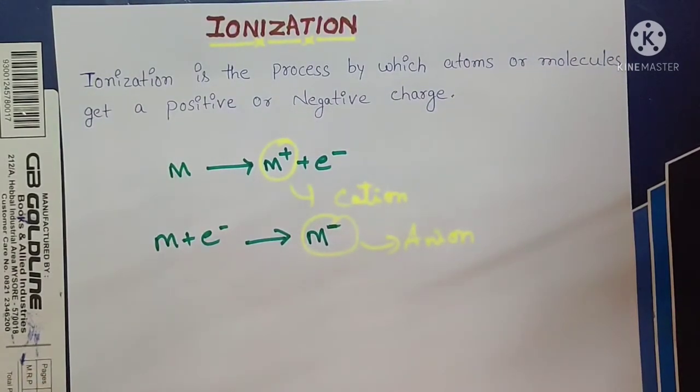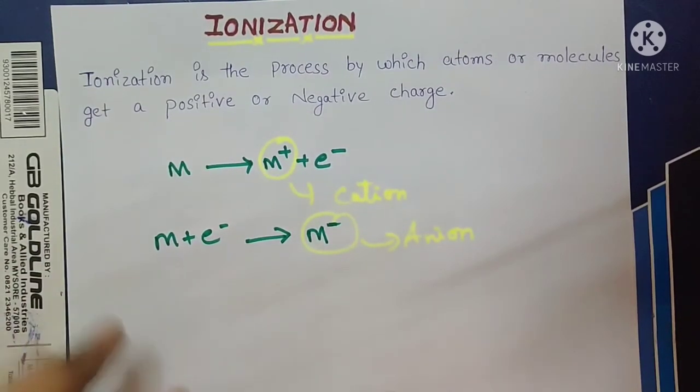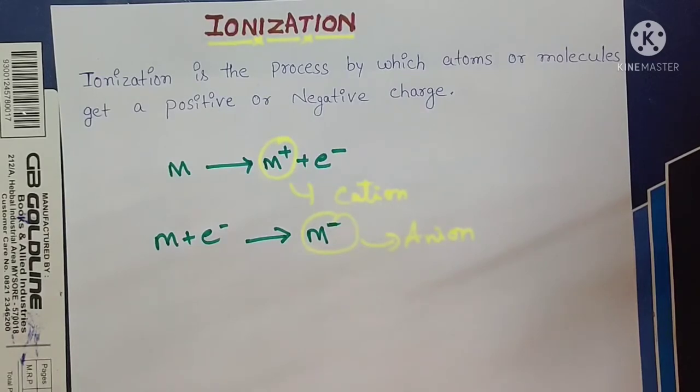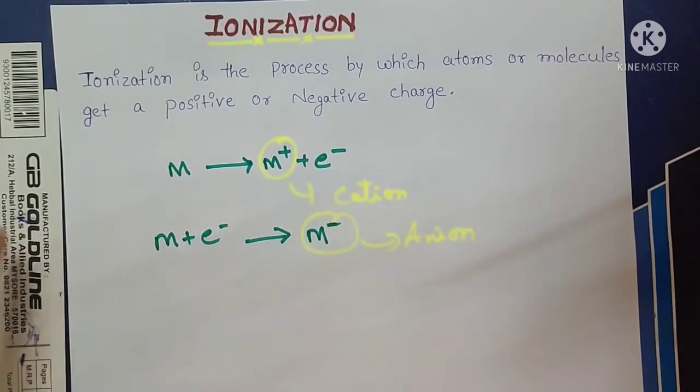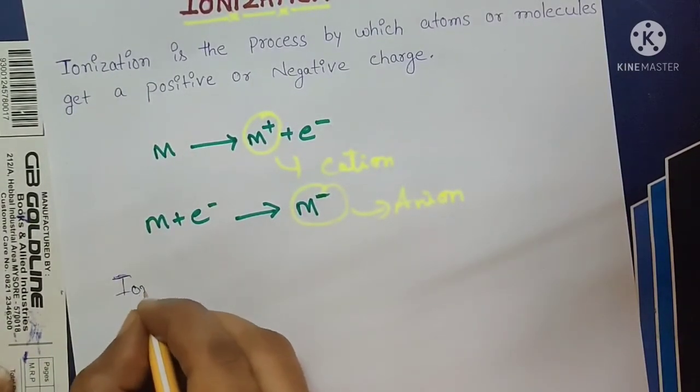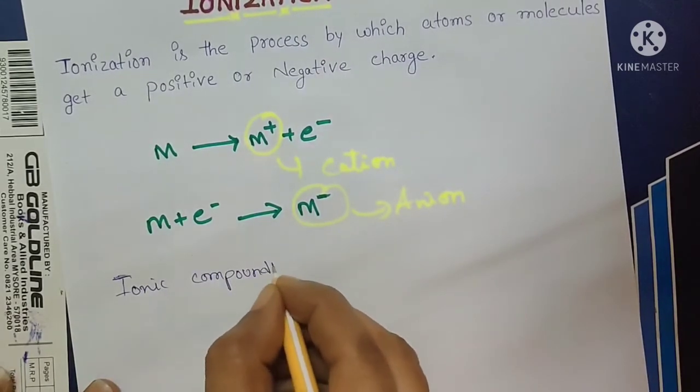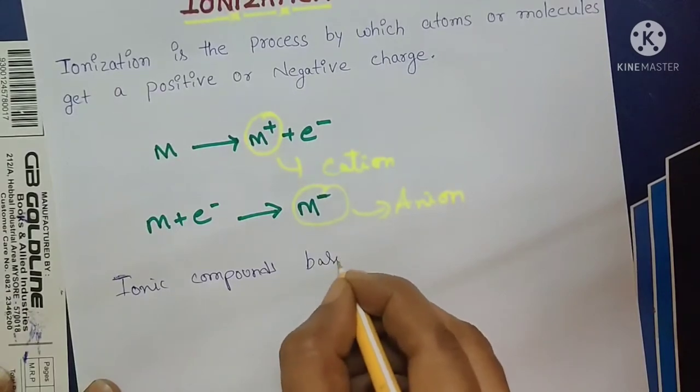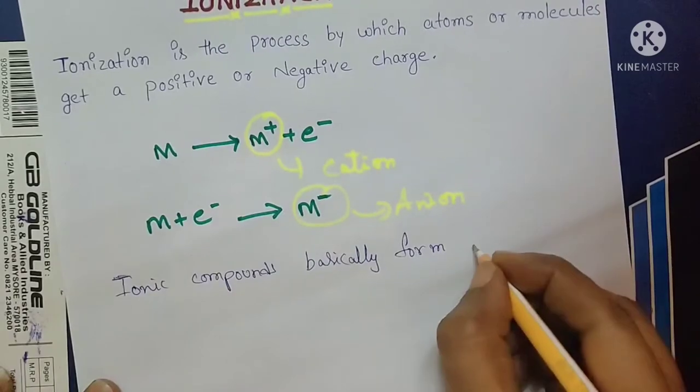This is ionization process. In the ionization process, mostly ionic compounds only ionize in the aqueous solution. Ionic, this is the important thing. Note this: ionic compounds basically form ions.